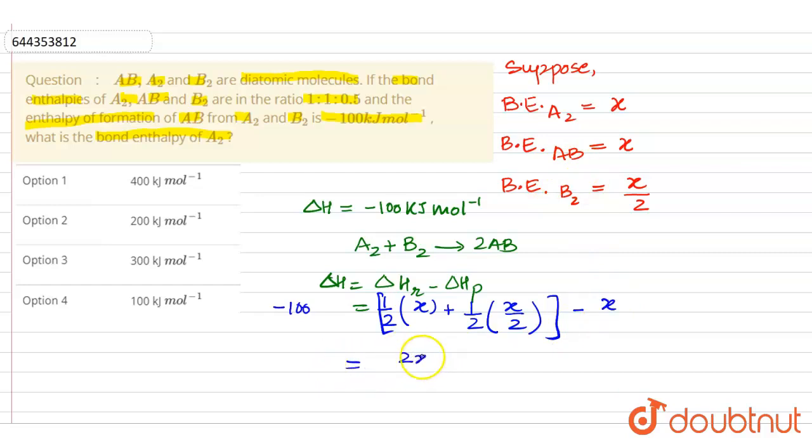we would get 2x plus x minus 4x by taking LCM, which would be 4, and the answer would come here. It will be -100, and the answer would come as x equals 400 kilojoules. So our answer here is option A is correct.